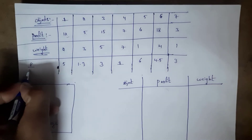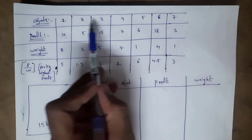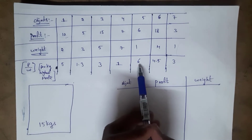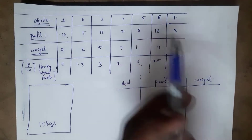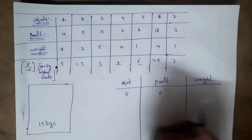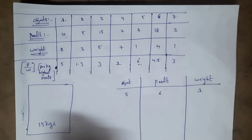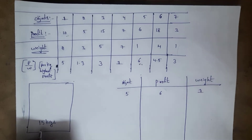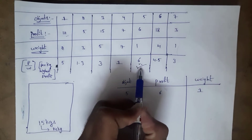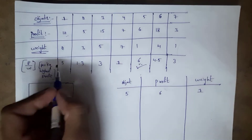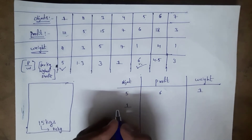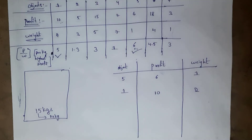Object 5 has the highest profit per kg of 6, so I select object 5 — profit is 6 and weight is 1 kg. Remaining capacity: 15 - 1 = 14 kg. Next highest profit per kg is 5, so I select object 1 — profit is 10 and weight is 2 kg.